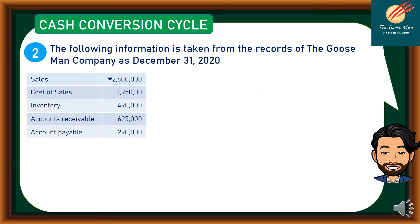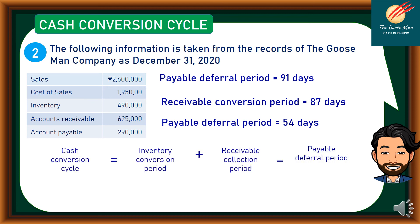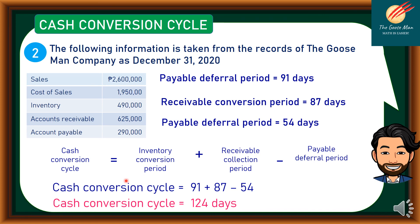Now that we know these figures, we can determine our cash conversion cycle. The inventory conversion period is 91 days, the receivable conversion period is 87 days, and the payable deferral period is 54 days. Cash conversion cycle equals inventory conversion period plus receivable collection period minus payable deferral period: 91 plus 87 minus 54. The cash conversion cycle equals 124 days.